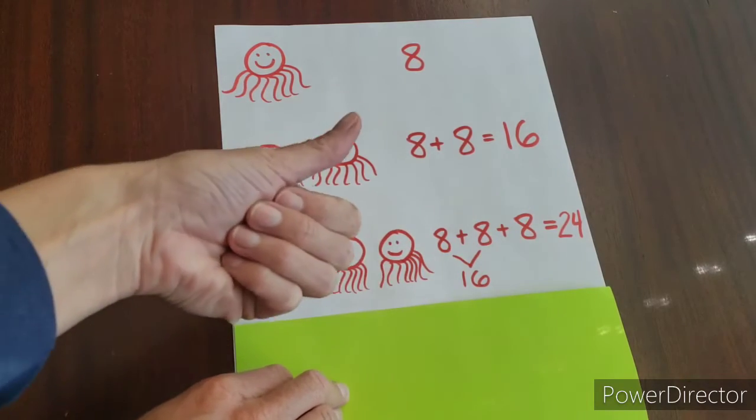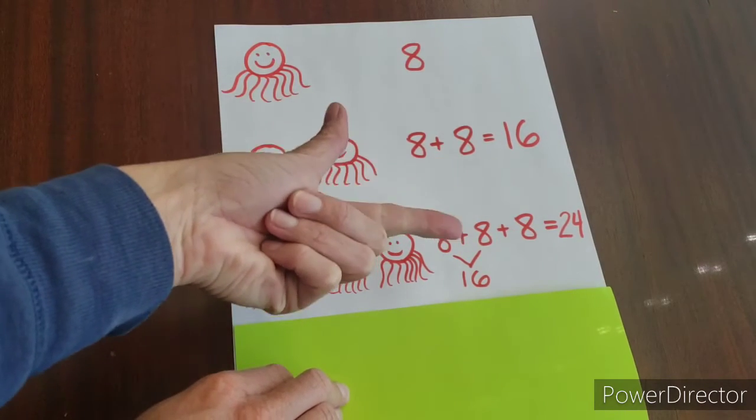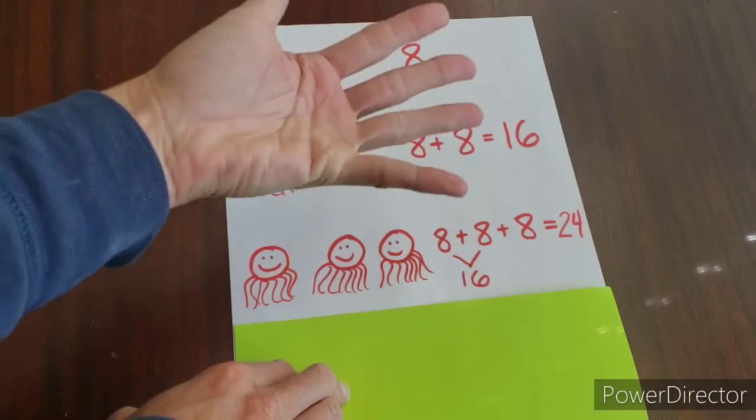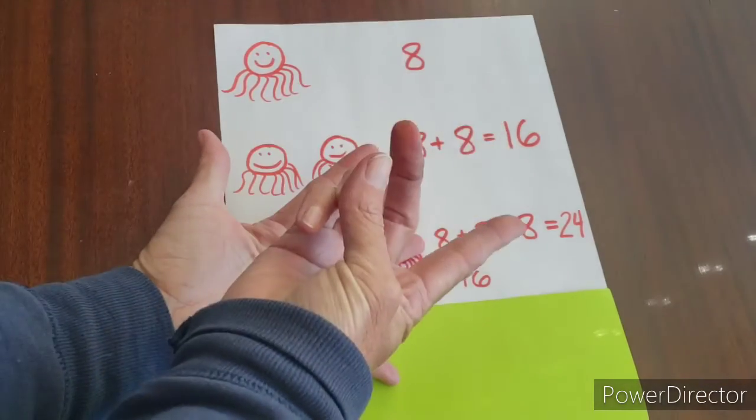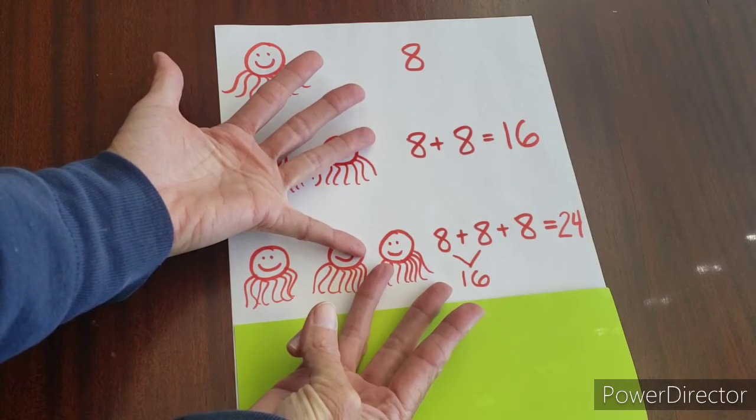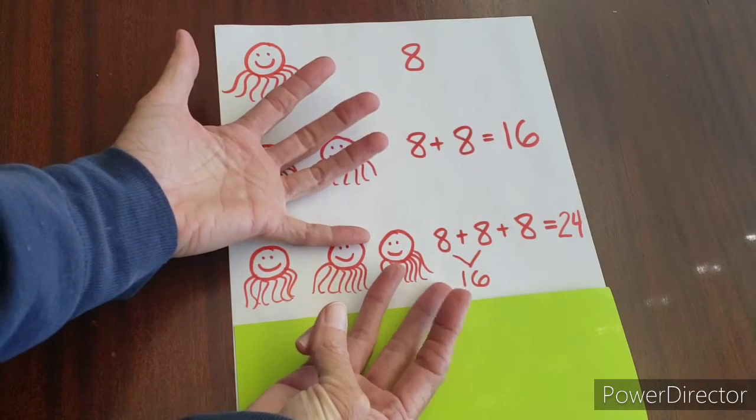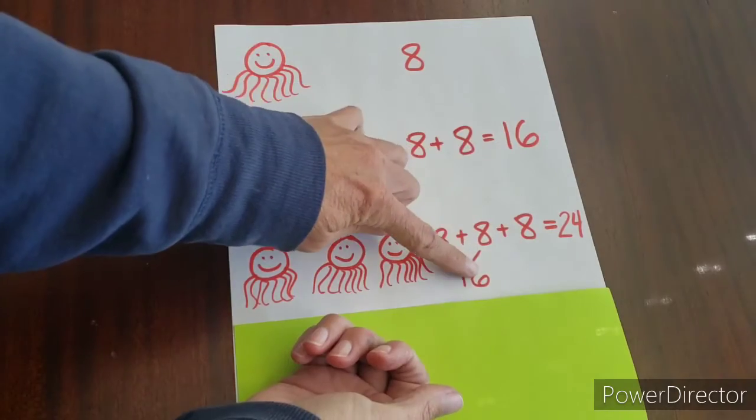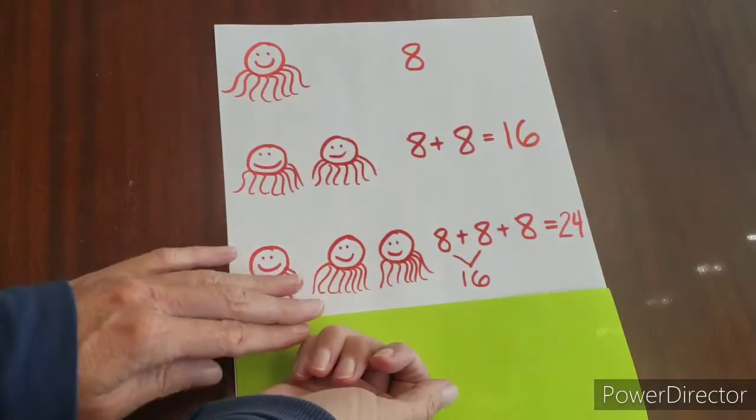So say 16, and then on your fingers go 17, 18, 19, 20, 21, 22, 23, 24. So I counted on, do you see I have eight, five here, and three here, that makes eight. So 16 plus eight is 24.